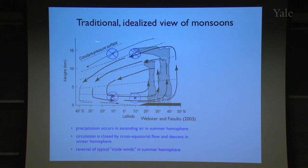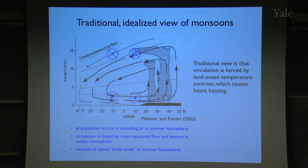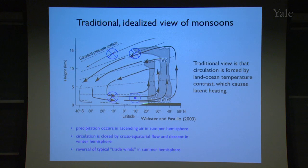In the upper troposphere we have easterly wind. As this warm air is rising, it's cooling adiabatically as the pressure drops, and precipitation forms and falls out. This is a traditional view — that this whole circulation is forced by the contrast in temperature between the land surface and the ocean.